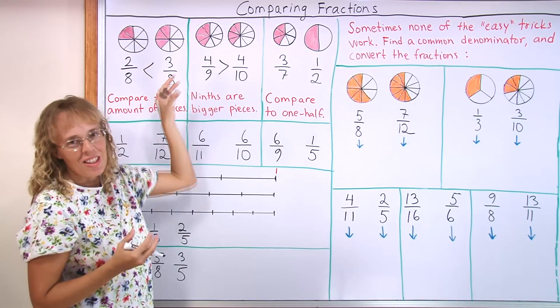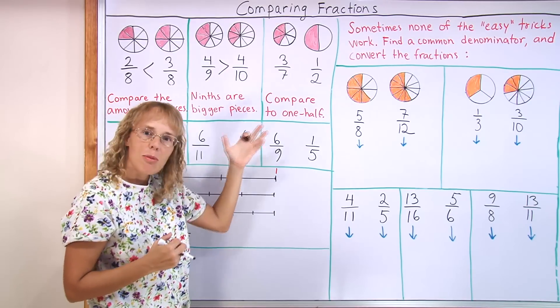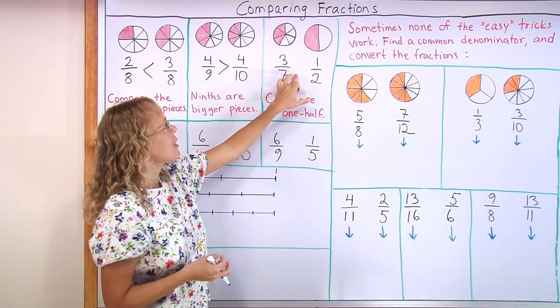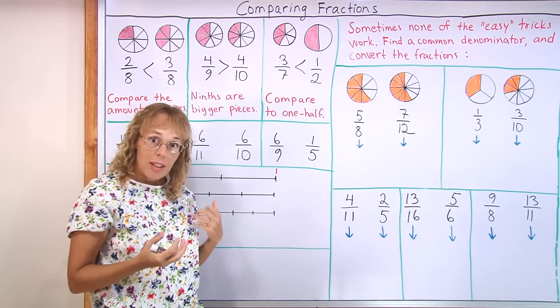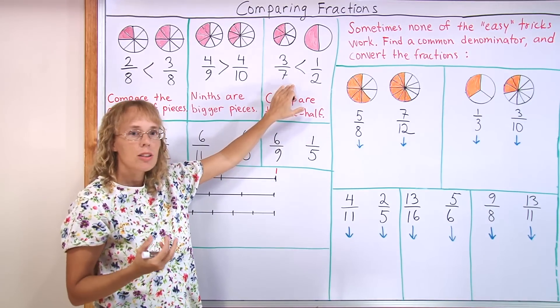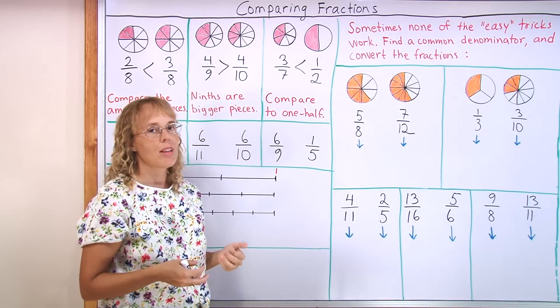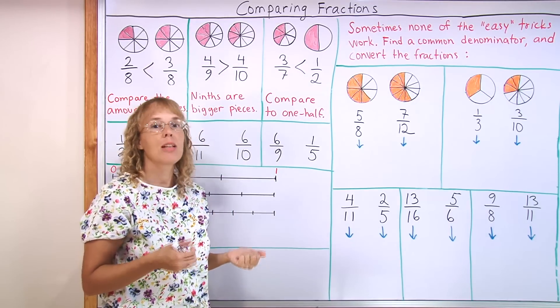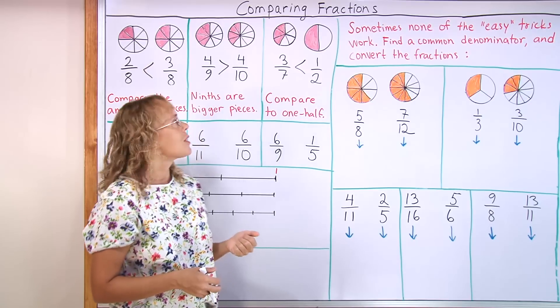And it might be visible from the pictures too. My pictures, of course, are hand drawn, they are not super accurate here in the video. Now here's another type of easy situation where we compare to one half. 3/7 is clearly less than 1/2, as you can see in the picture. But even if you didn't have the pictures, you can still figure that out easily because three and a half over seven would be exactly one half. If I had 3.5/7, that would be half, equal to half. But it is 3/7, it is less than that.